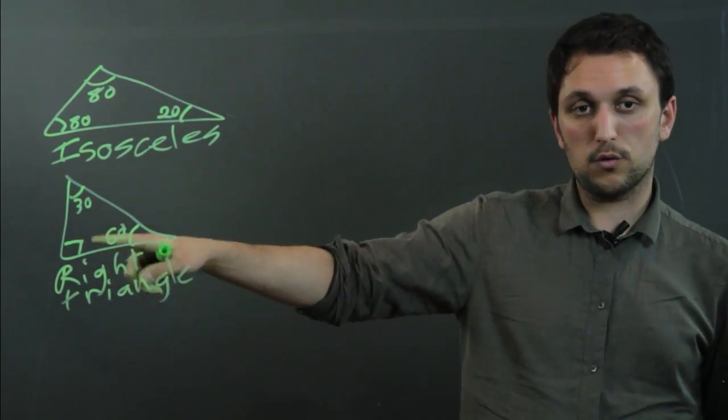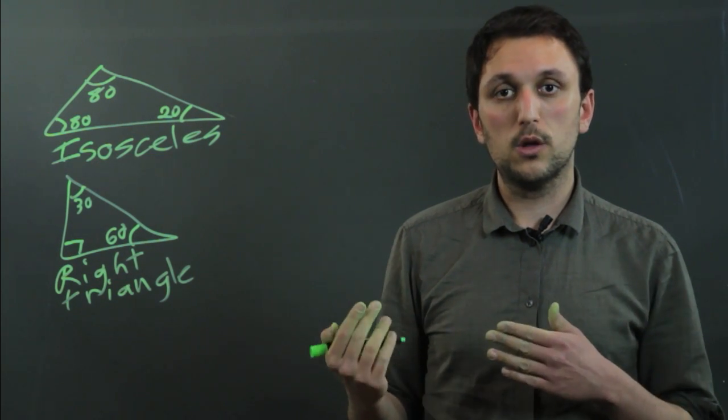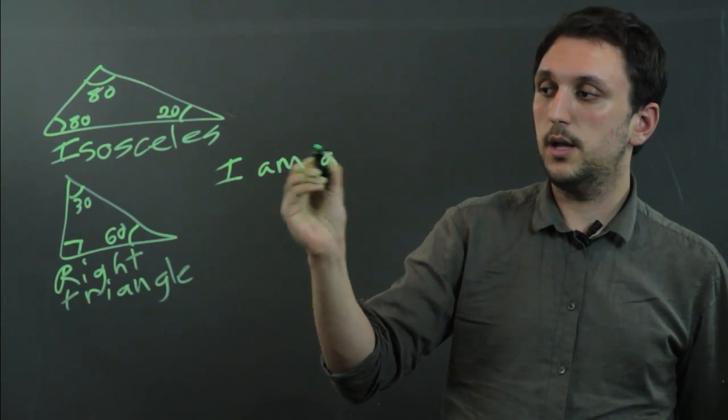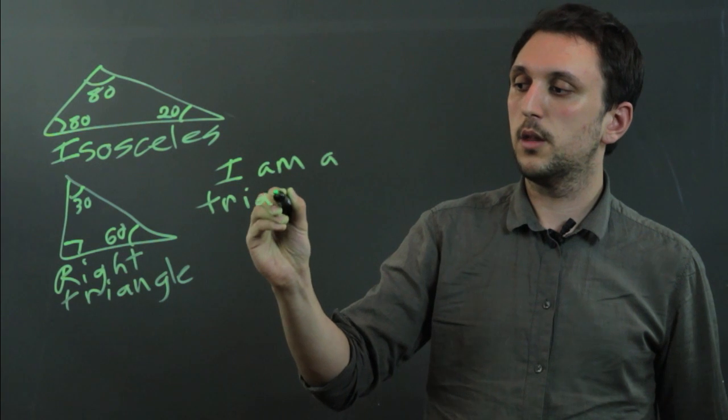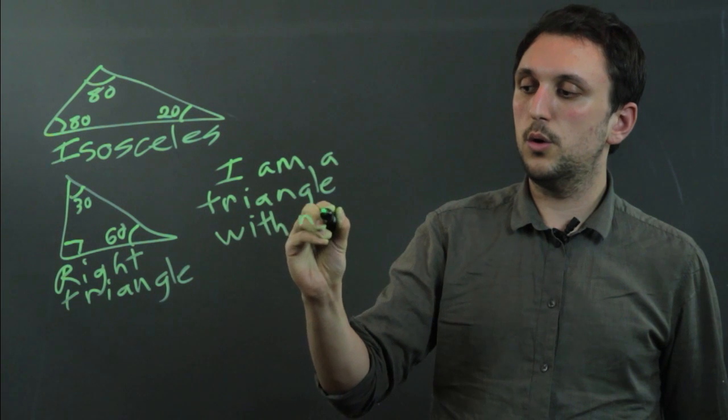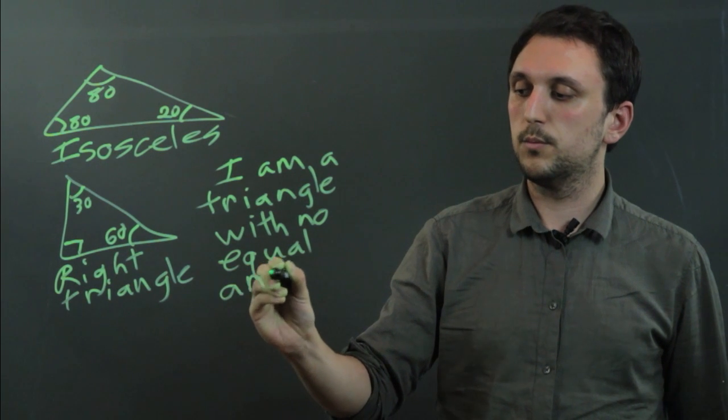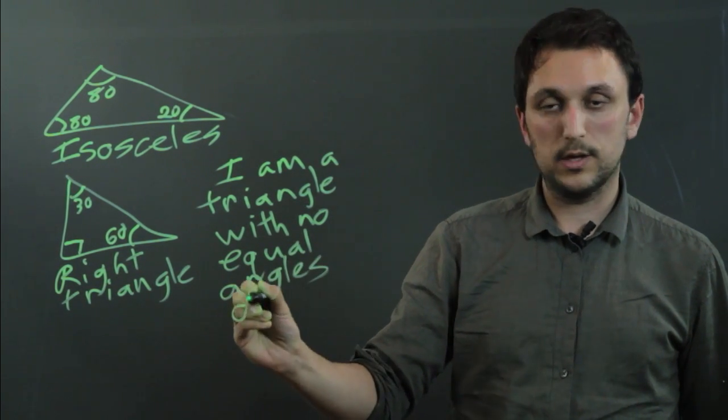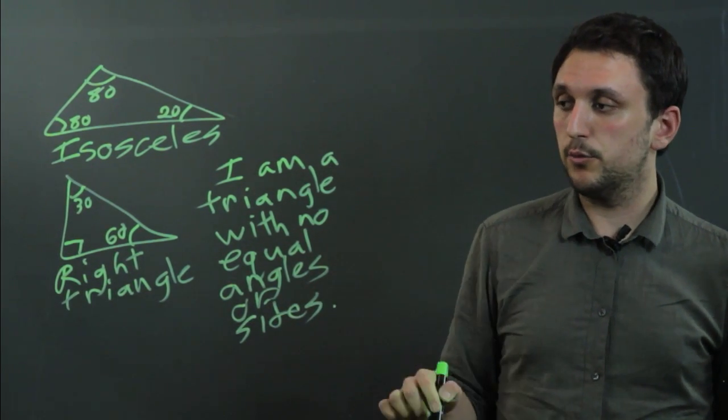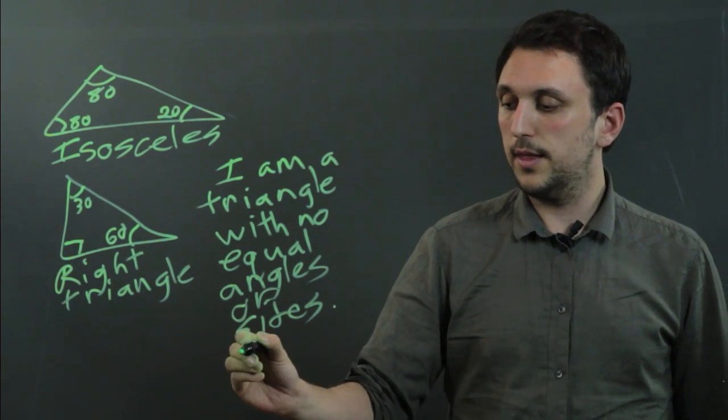Now if you don't want to just draw pictures and have the students name them, you can do word games, where you can say, I am a triangle with no equal angles or sides. What am I? And the student should be able to say that if it has no equal angles or no equal sides, they can say, I am scalene.